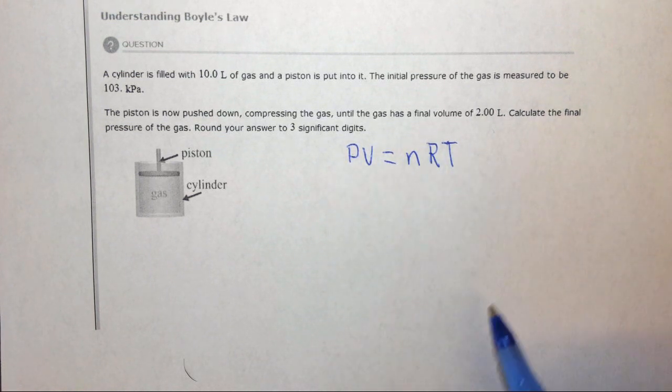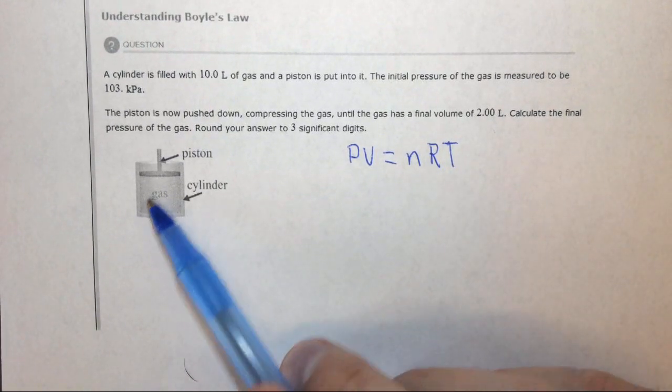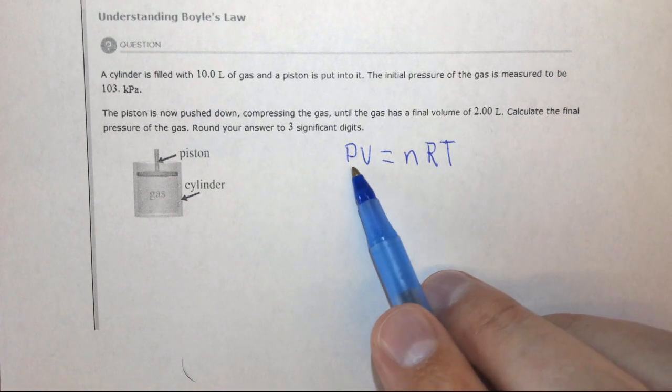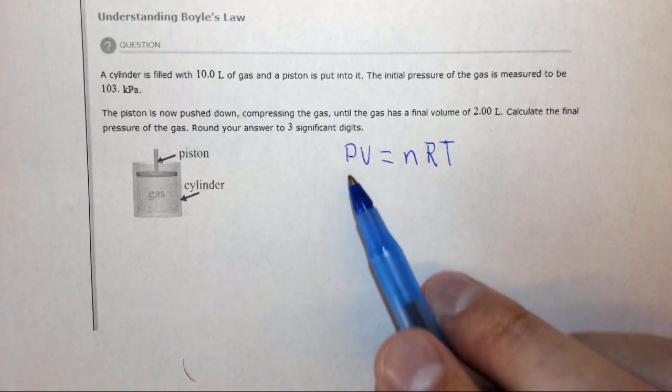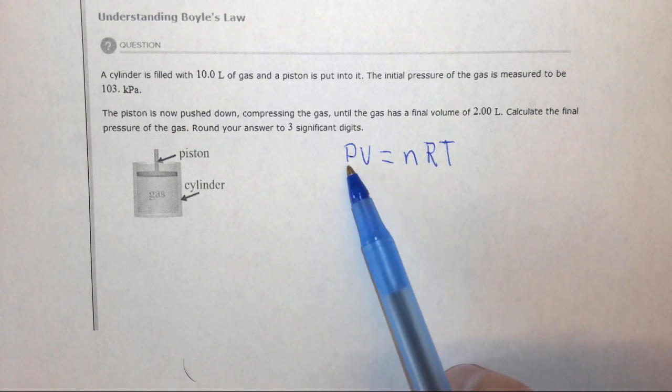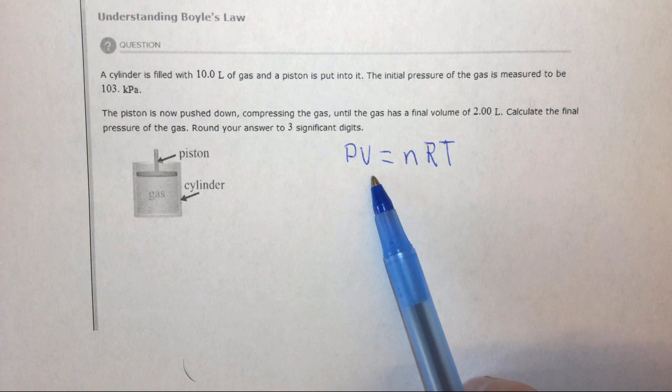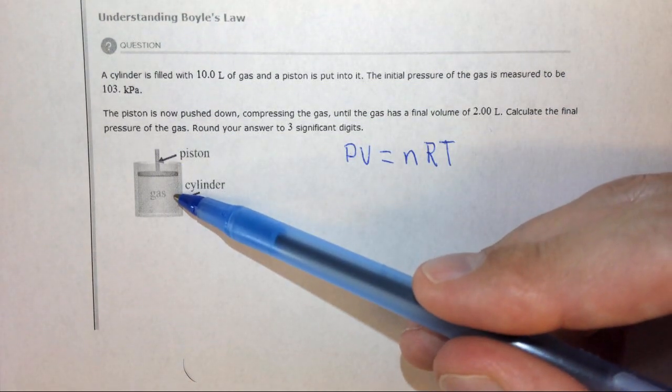We want to relate two of these variables. In this case, we're not changing n, the amount of gas, or T, the temperature. We're only relating pressure and volume. When two variables are on the same side of the equation, like pressure and volume, they're inversely proportional to each other. As the volume goes down, the pressure goes up.